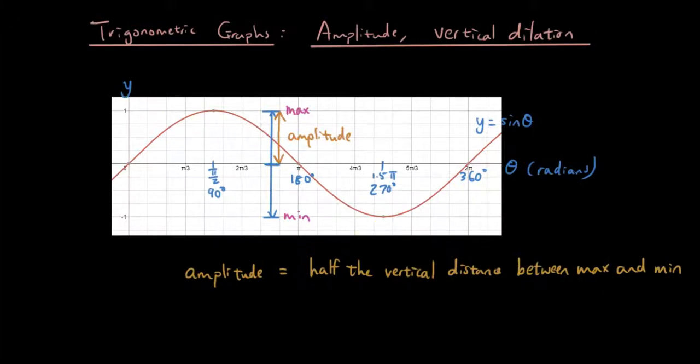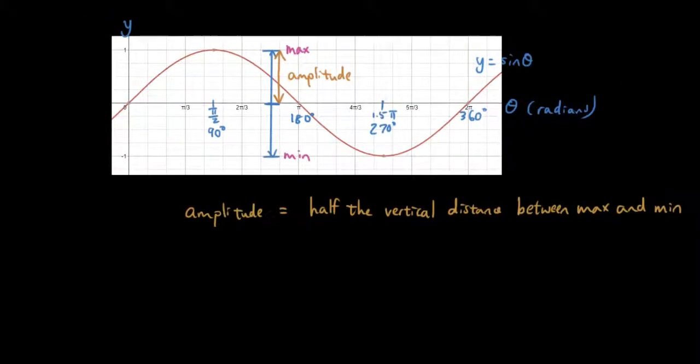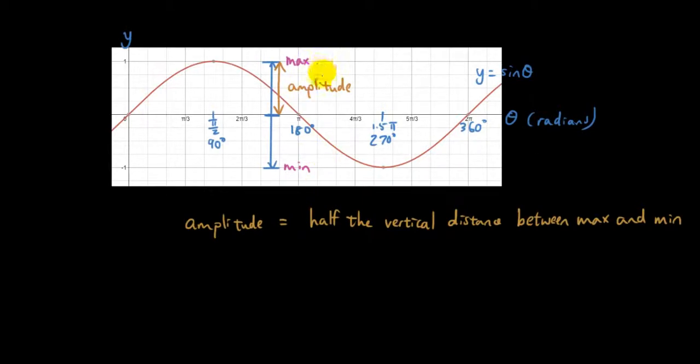How do you figure this out using a formula? Well we know that the maximum point, let's call the maximum y value y2, and let's call the minimum y value y1. Then you can say the amplitude is y2 minus y1, which will give us the vertical distance, divided by 2.